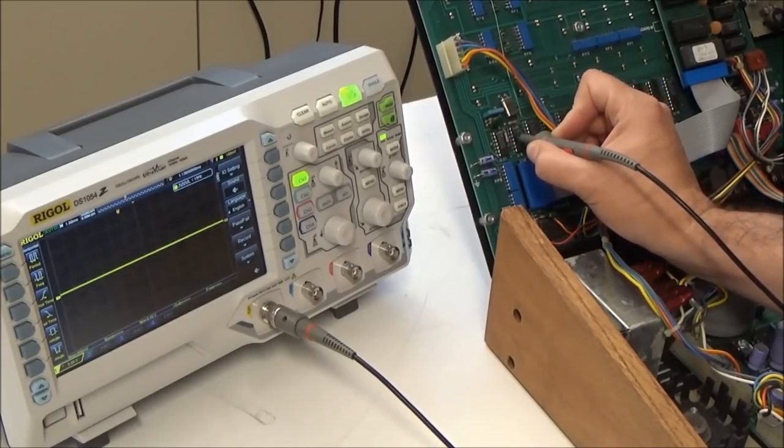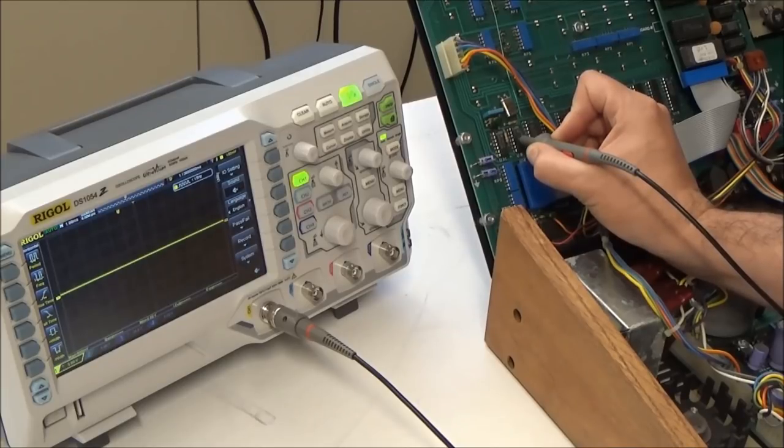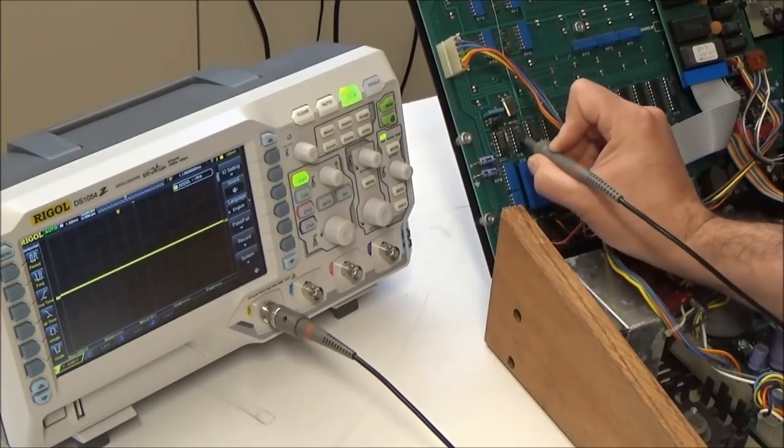So let's look at the clock input to the flip-flop. So that's pin 3 of this U8 chip. And we have nothing. So no 4 megahertz square wave. So problem probably isn't here.